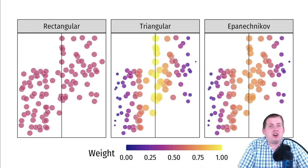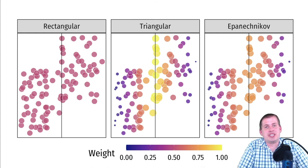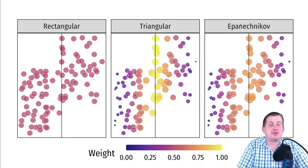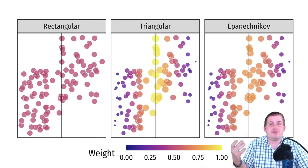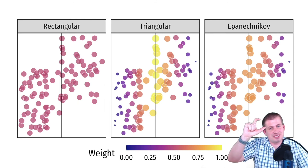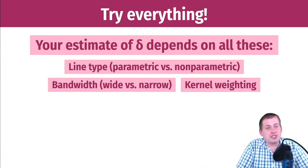Which kernel should you choose? All of them. As you'll see in the example, you calculate many different average treatment effects by playing with the bandwidth, the kernel, and whether you use parametric or non-parametric lines — just throw everything you can at the gap to see how big it is. You'll have a whole bunch of different gap sizes, and in the end you can choose one to report or report a range. The size of the gap depends on the line type, bandwidth, and kernel weighting you use.